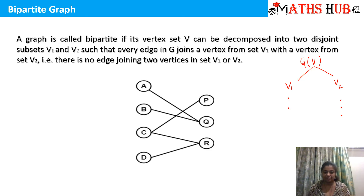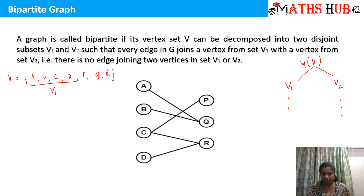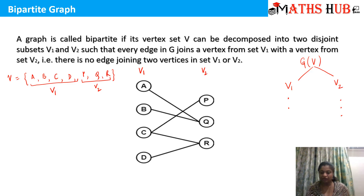Let's see some examples. You can see that the graph has the vertex set containing vertices A, B, C, D, P, Q, and R. We have decomposed the set V into two subsets: A, B, C, D in vertex set V1 and P, Q, R in vertex set V2. So 4 vertices in V1 and 3 in V2. Now you can see that every edge joins one vertex in V1 with a vertex in V2.